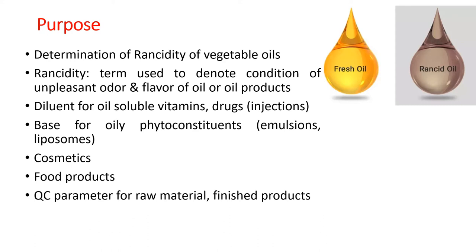At the industrial level, when producing a cream, you deal with gallons of oil. Before using the oil in production, it is tested for rancidity; if rancid, it is not used. The same applies to finished products: after manufacturing, products are stored in warehouses, and before dispatching to the market, they must be tested for rancidity if they contain oil.